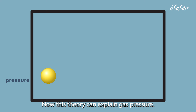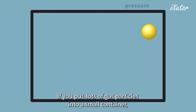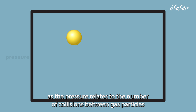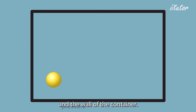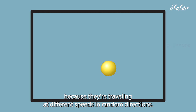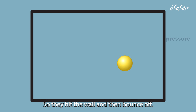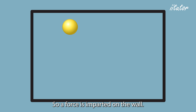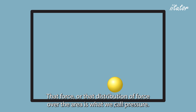This theory can explain gas pressure. If you put lots of gas particles into a small container, you get what's called pressure. Pressure relates to the number of collisions between gas particles and the wall of the container. The wall gets hit by particles traveling at different speeds in random directions; they hit the wall and bounce off, causing a momentum change, which imparts a force on the wall. That force distributed over the area is what we call pressure.